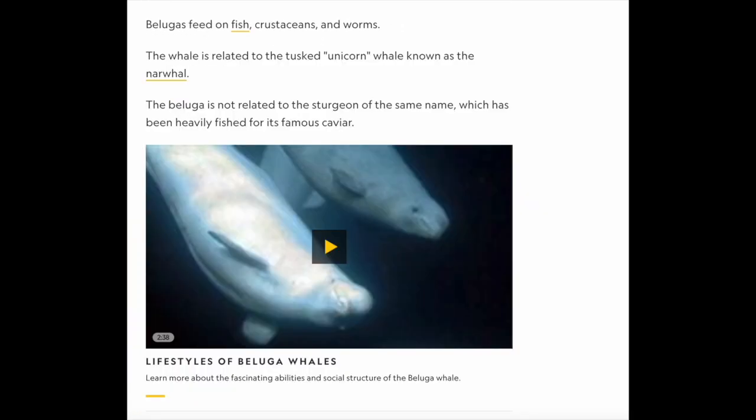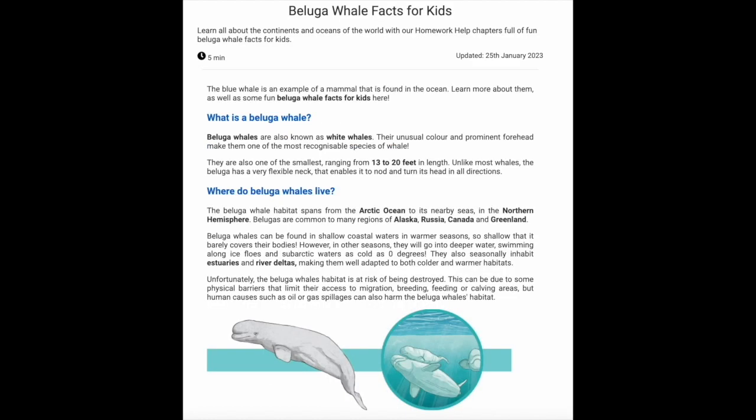Belugas feed on fish, crustaceans, and worms. The whale is related to the tusked unicorn whale known as the narwhal. The beluga is not related to the sturgeon of the same name, which has been heavily fished for its famous caviar. Awesome job reading along the first article. Now, let's go ahead and read the second.